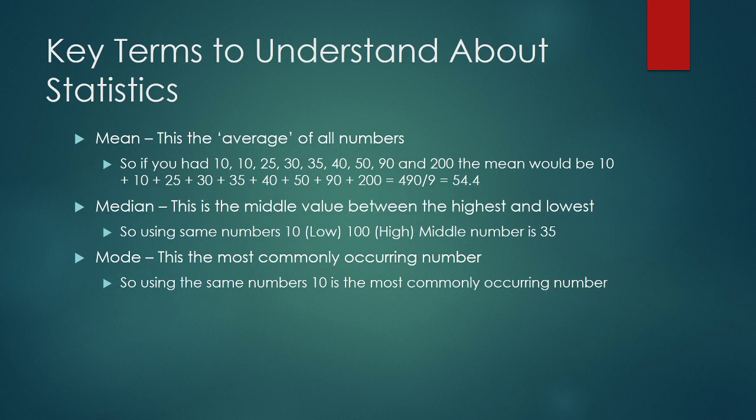Very often when you look at statistical data, there are three key terms that will come up over and over again: the mean, which is going to be your most common occurrence, your median, and your mode.